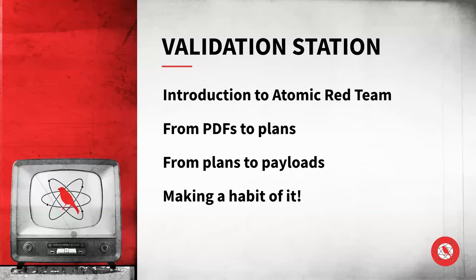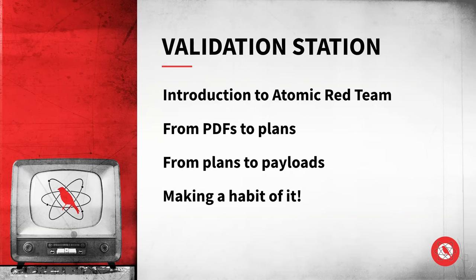By way of an agenda, we're going to walk through a very brief introduction to Atomic Red Team, just to make sure everyone's calibrated and on the same page. Then we'll talk about going from a threat report or a PDF into a basic emulation plan — looking at what we extract to figure out what we want to test. Then we'll take those using Atomic Red Team into a set of payloads to execute your test. We'll also talk about exciting open source tools that make this easier to automate, capture and store, and track and measure your testing.